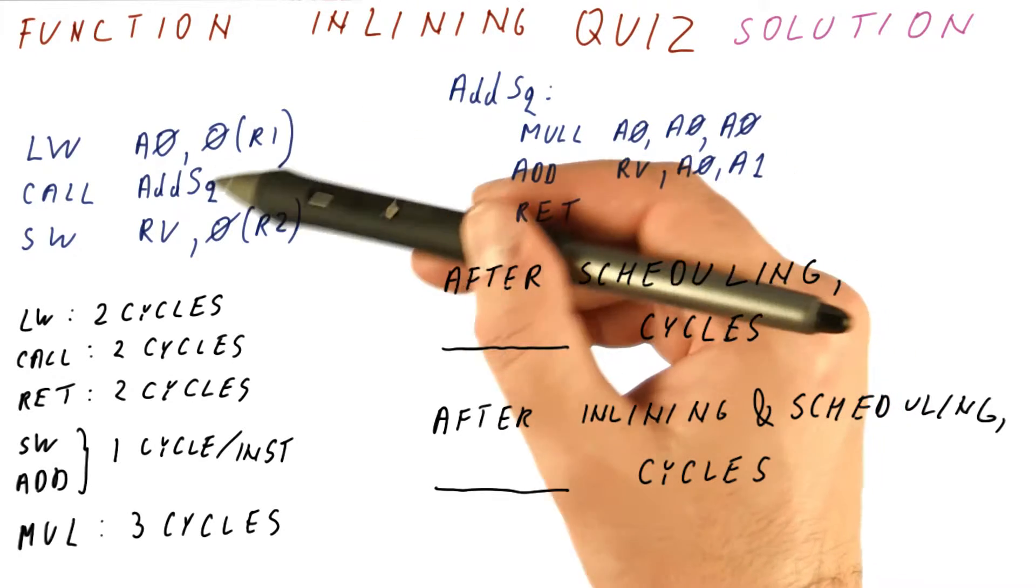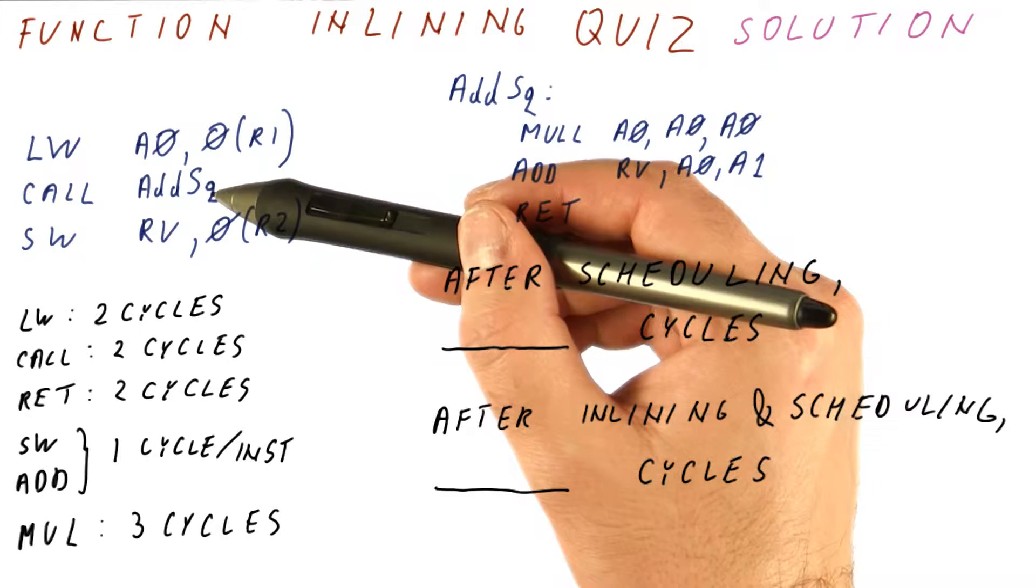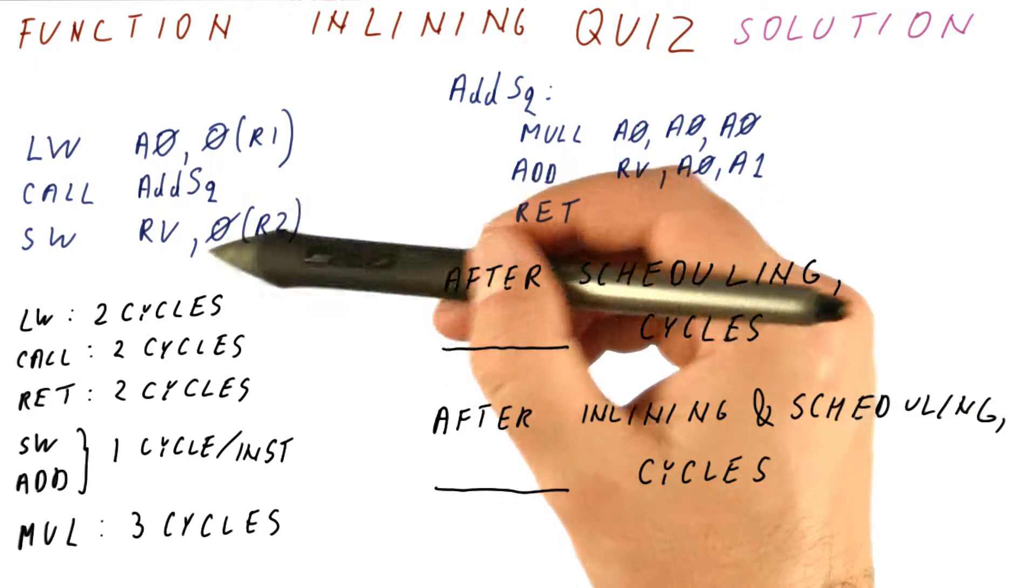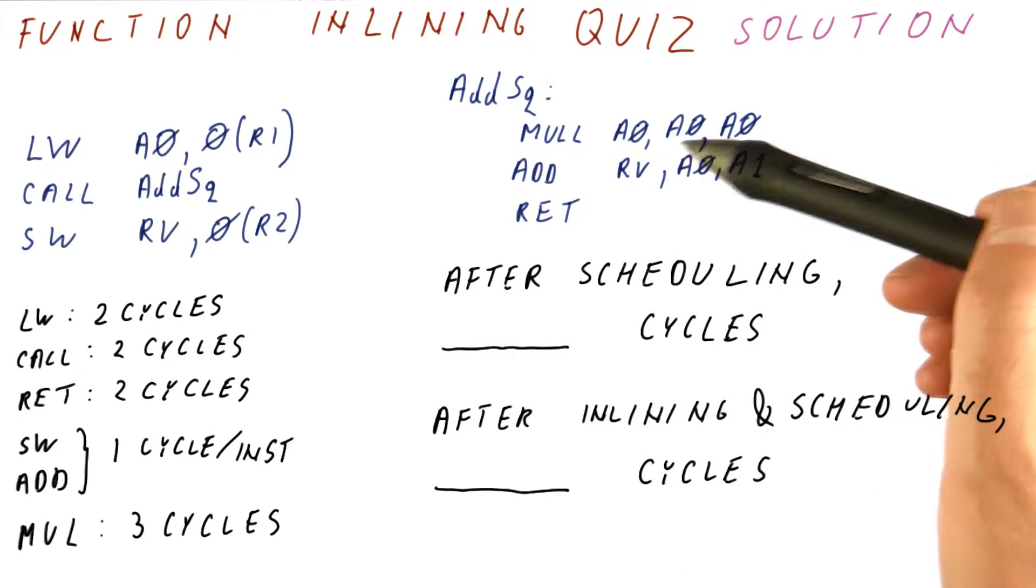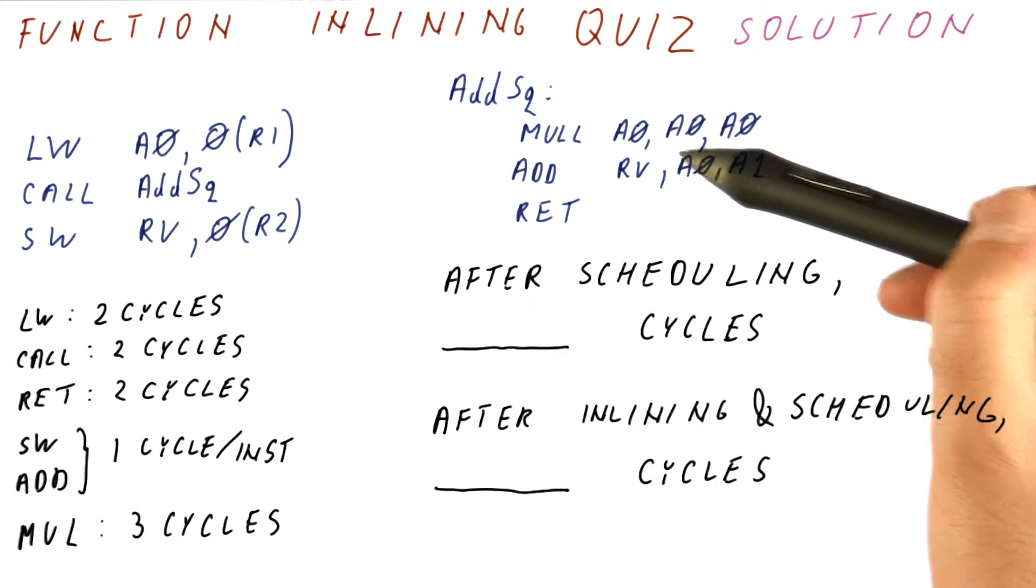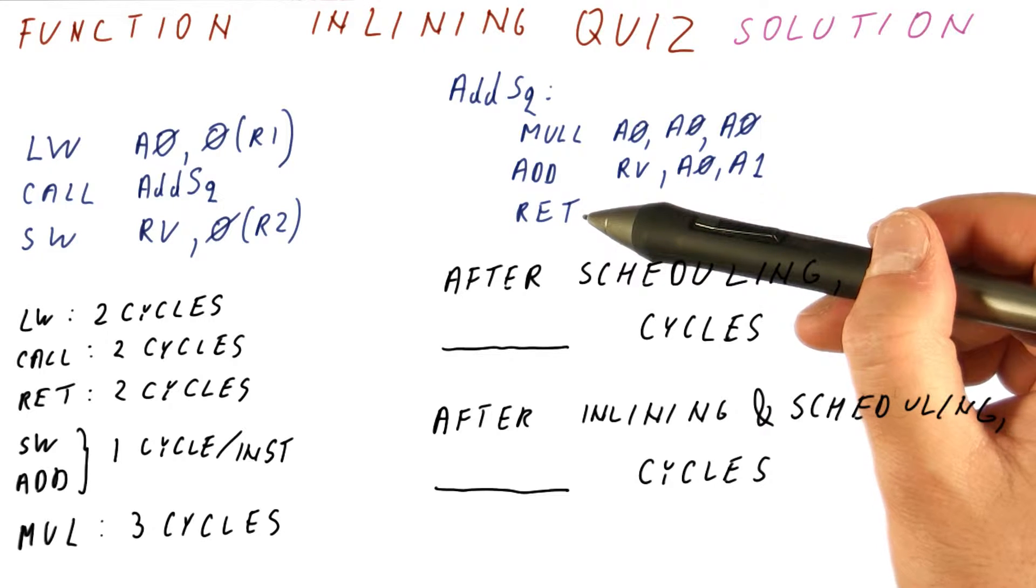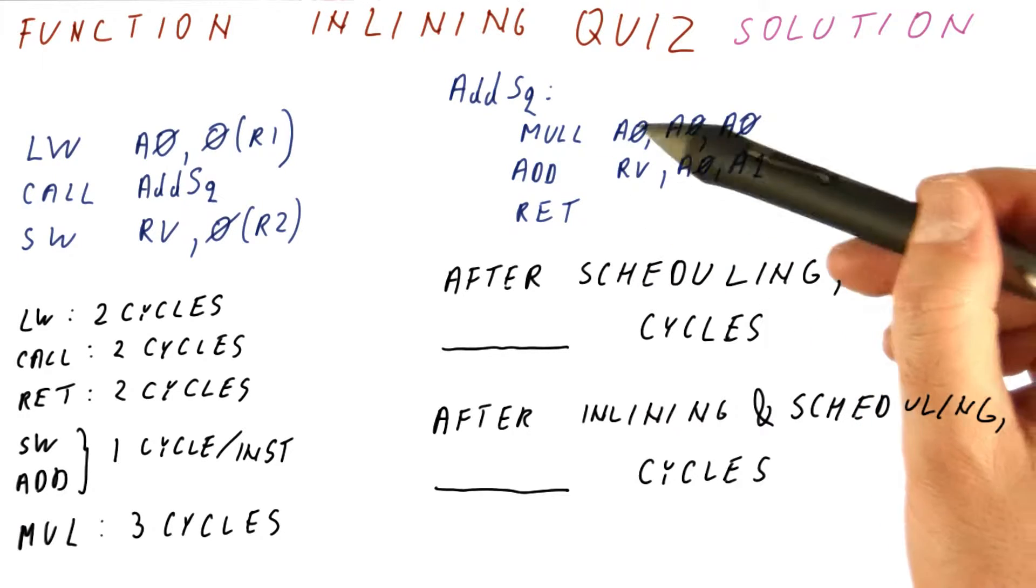We have a load. We have to do it before the call. And after the call, we can do the store. So scheduling can do nothing here. Here, we need to do the multiplication, and then the add depends on it, and then we can only return. So really, there is nothing scheduling can do here.